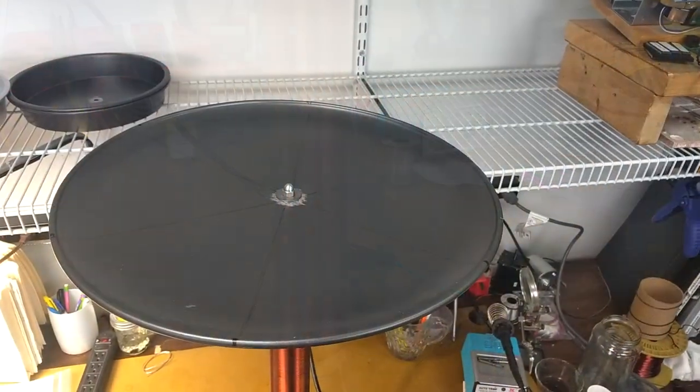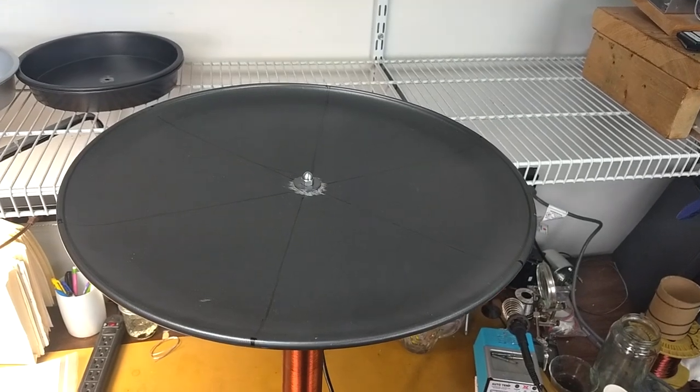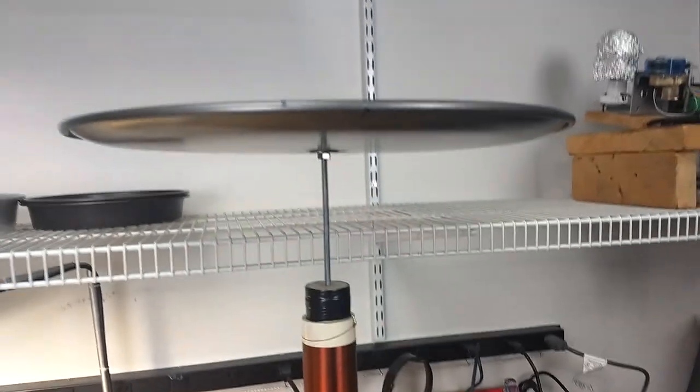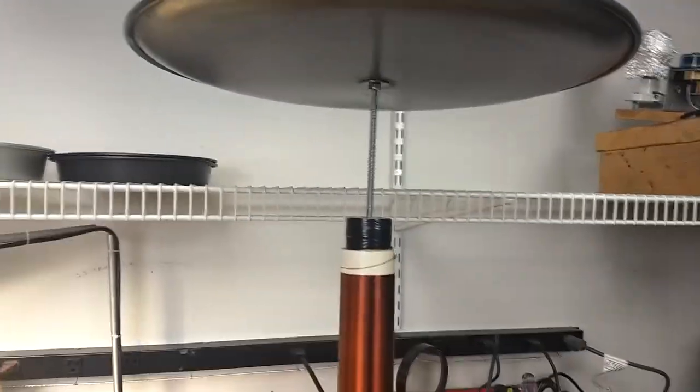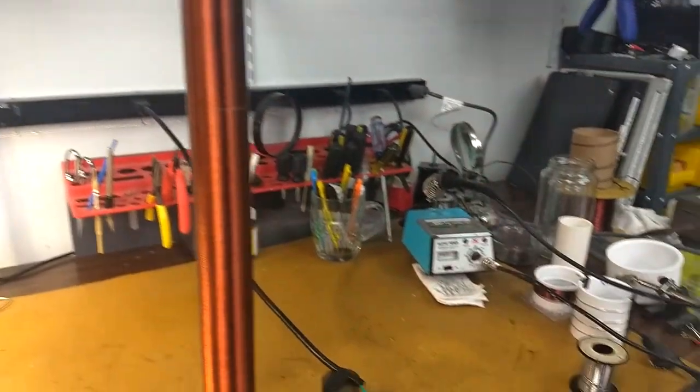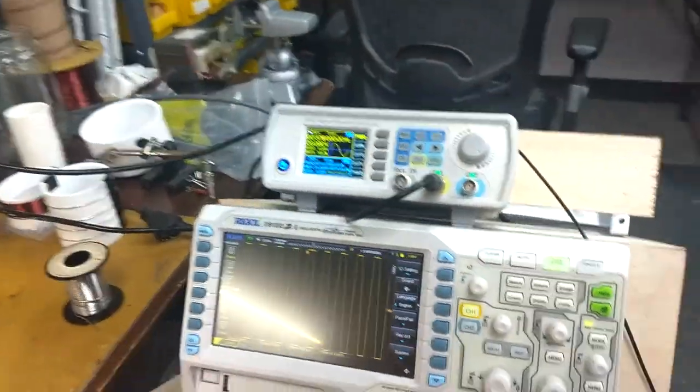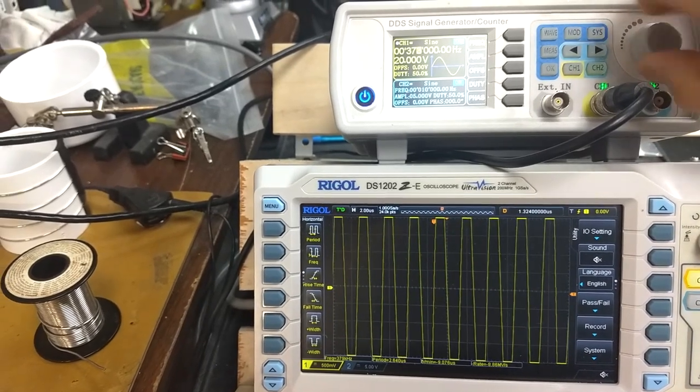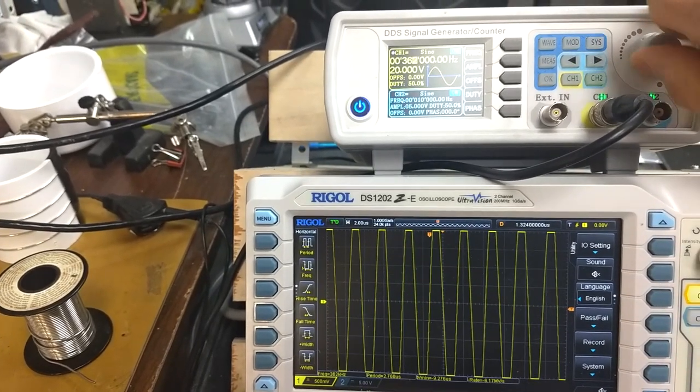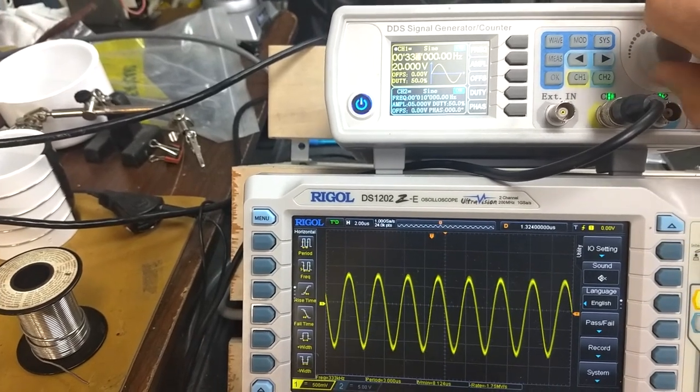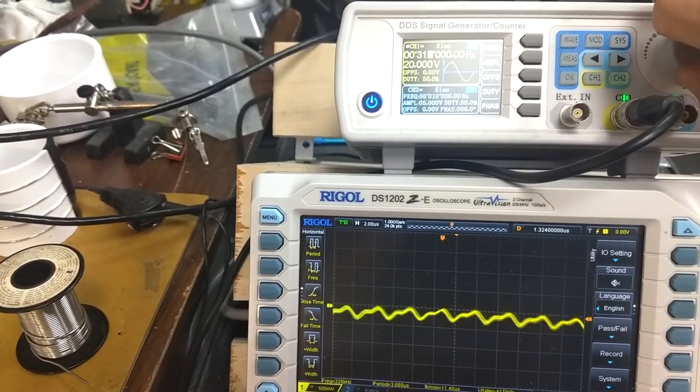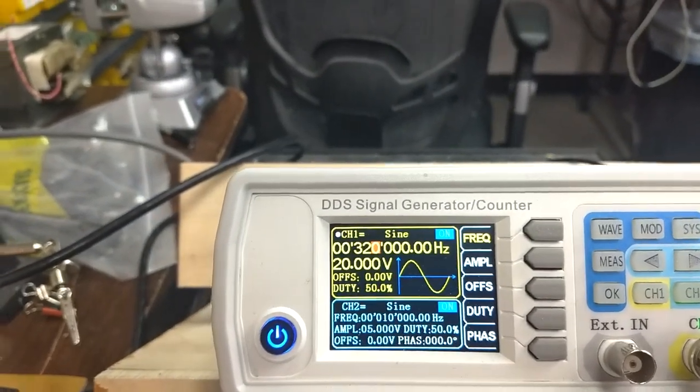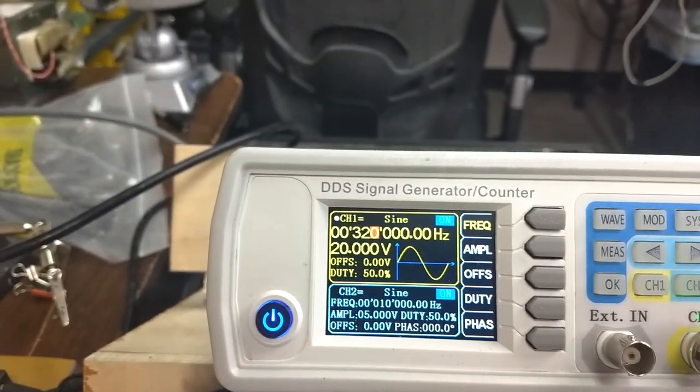I just remembered that I had a pizza pan with a hole in the middle. So I stuck that on top. Let's see what the frequency of that is. We can see it really lowered the first resonant point to 320 kilohertz.